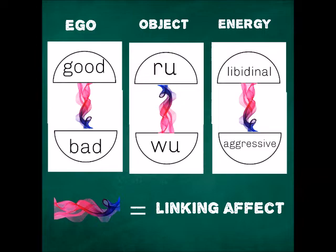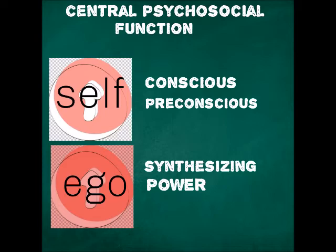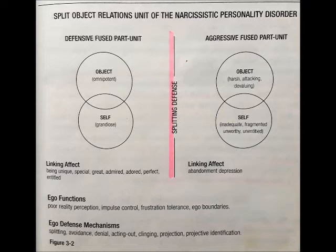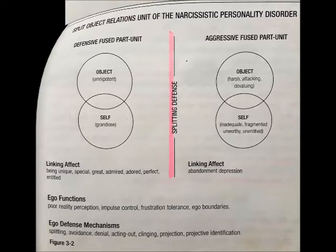For the narcissist, the internalized mother object is either omnipotent or harsh and attacking. And the narcissist's self is either grandiose — consistent with the omnipotent mother — or inadequate and unworthy, consistent with the devaluing mother. It has to be one or the other because of the use of the defense mechanism splitting. This defense is to keep the affects apart to avoid feeling abandonment depression.